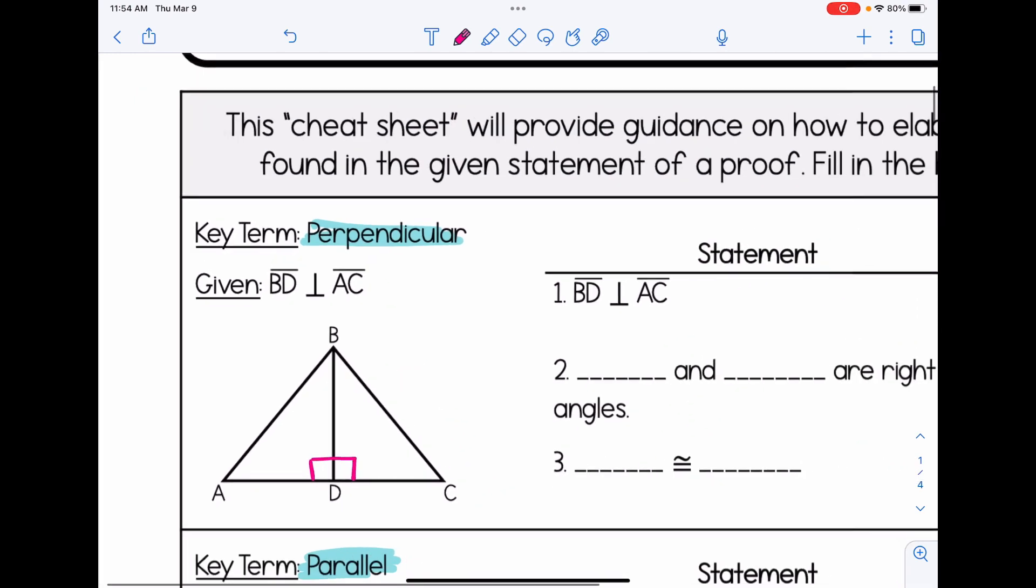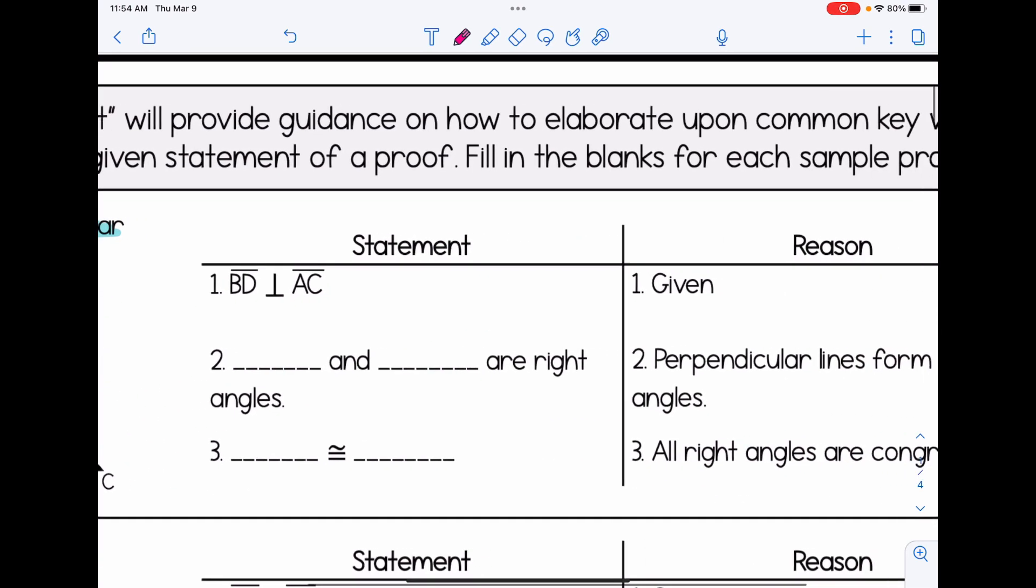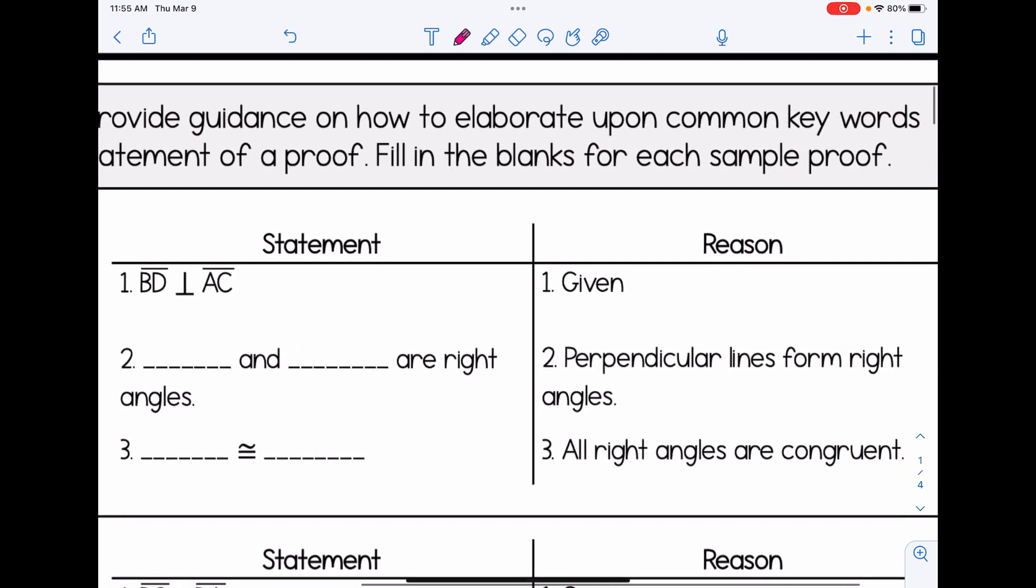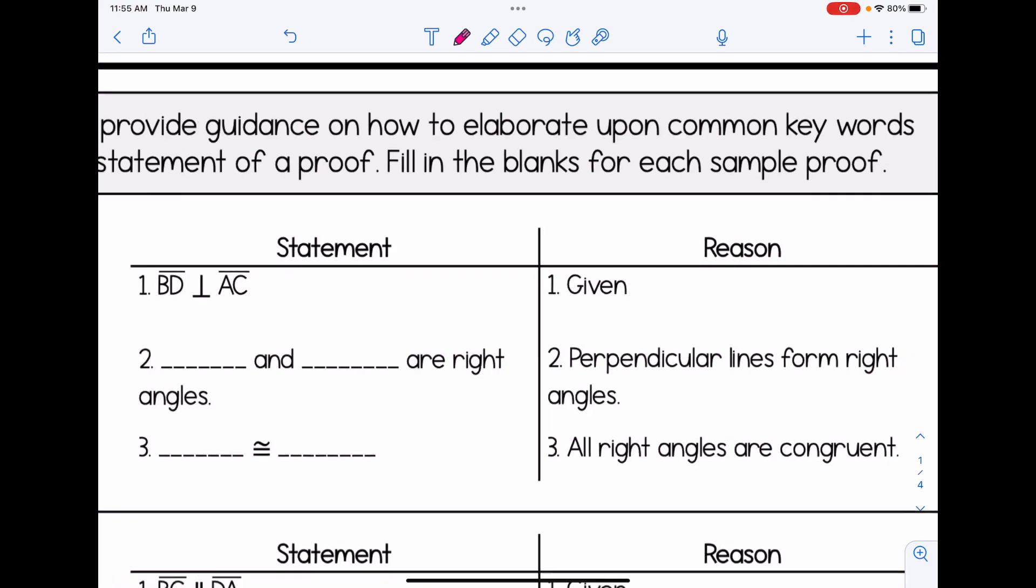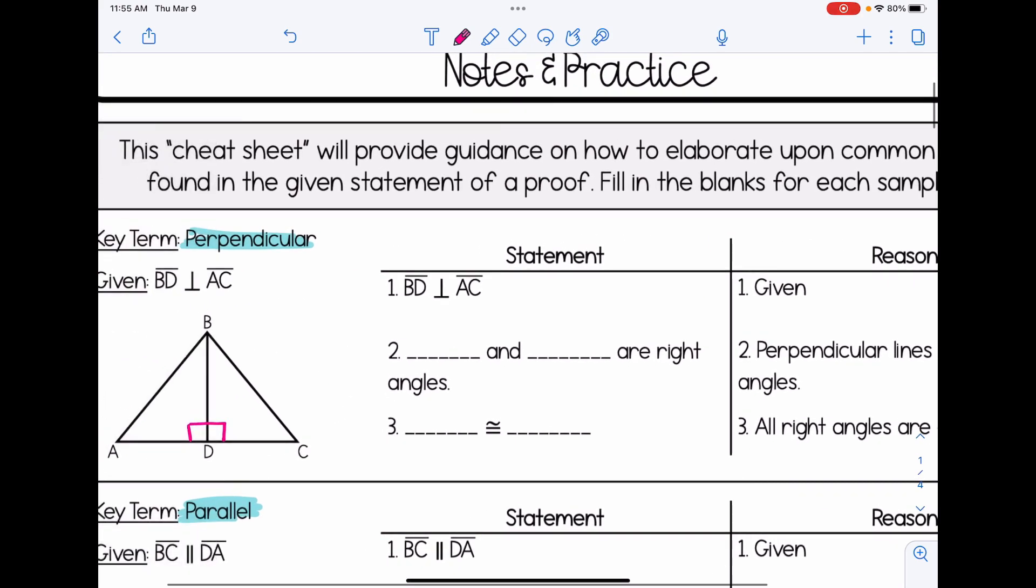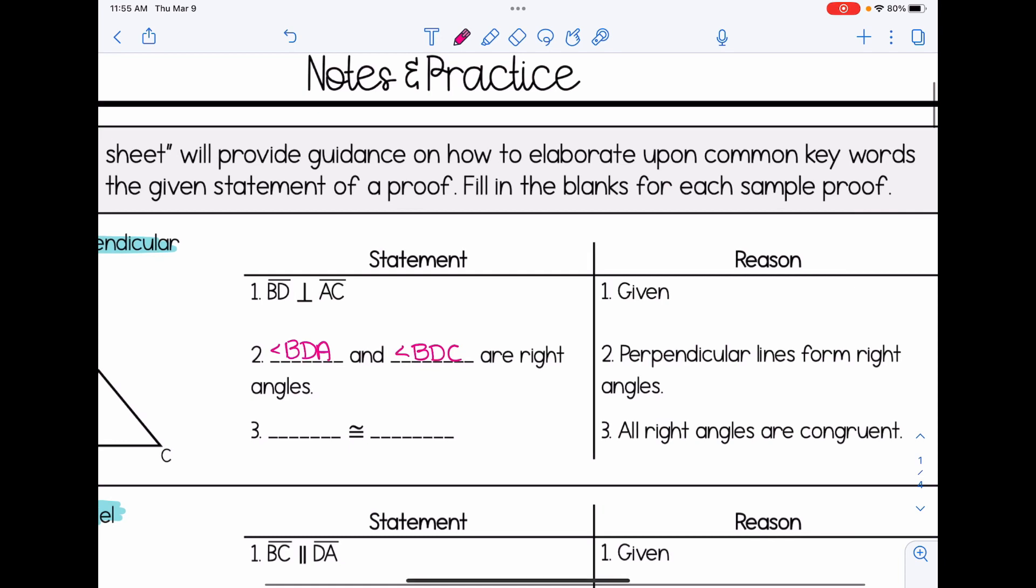In a proof, we're going to take that same information and just format it. So we start off by writing the givens: BD is perpendicular to AC. In the reason column, we explain how we know that. Well, that was simply given to us. Then we're going to identify what those right angles are, just like we did in the picture. So they are angle BDA and angle BDC. How do we know that? Well, perpendicular lines form right angles.